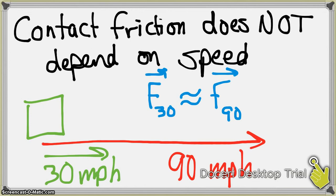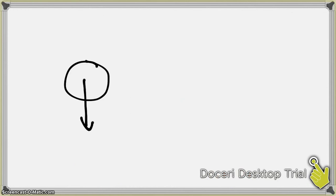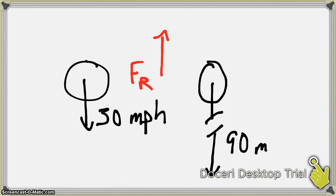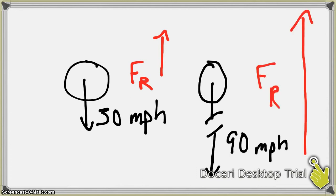However, that is not the case when you have fluid friction — like air resistance or water drag, like when you're running through that swimming pool. Fluid friction actually does depend on the speed. If you have a rock or a cannonball falling through the air at 30 miles an hour, you're going to have a certain amount of air resistance. But as it speeds up to 90 miles an hour, you're going to have that much more air resistance. The air resistance increases with increasing speed.